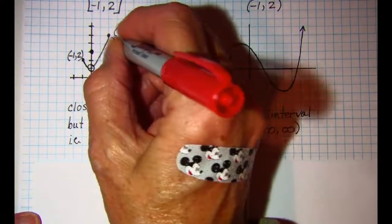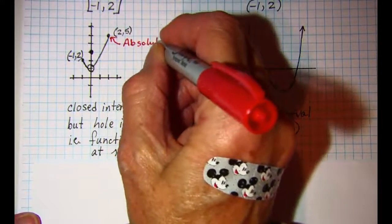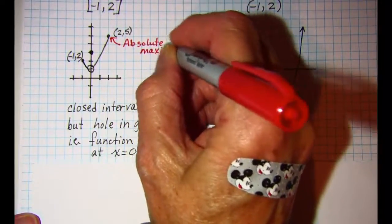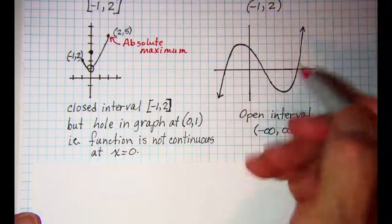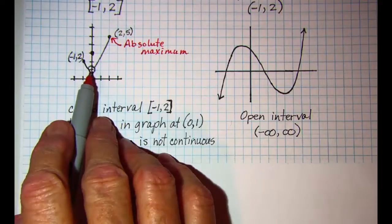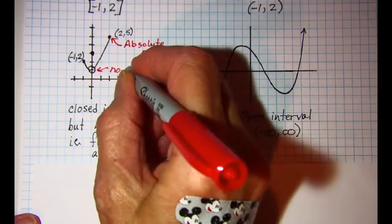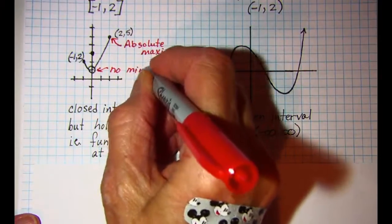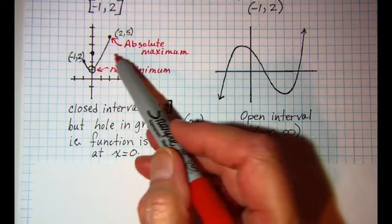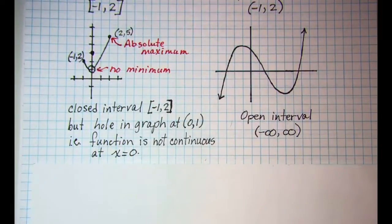So this point is going to be an absolute maximum. But since this point here, since there's a hole in the graph, we have no minimum. Because again you can get closer and closer and closer to that point but you never have a specific point there that is a minimum.